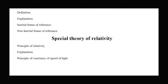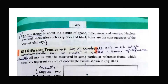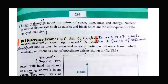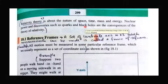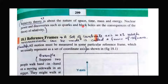This theory is very important. It deals with the nature of space, time, mass, and energy. Nuclear power — you know that nuclear means nucleus — so any power relevant to the nucleus, and discoveries we have seen in our next unit, such as quarks and black holes, are consequences of the theory of relativity. These are all modern physics concepts.